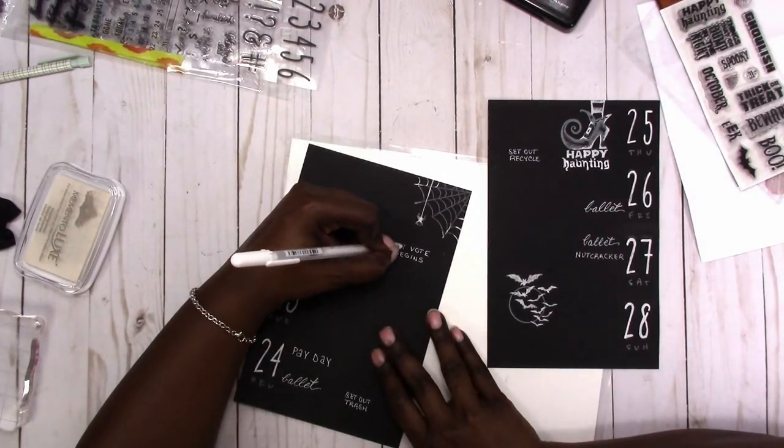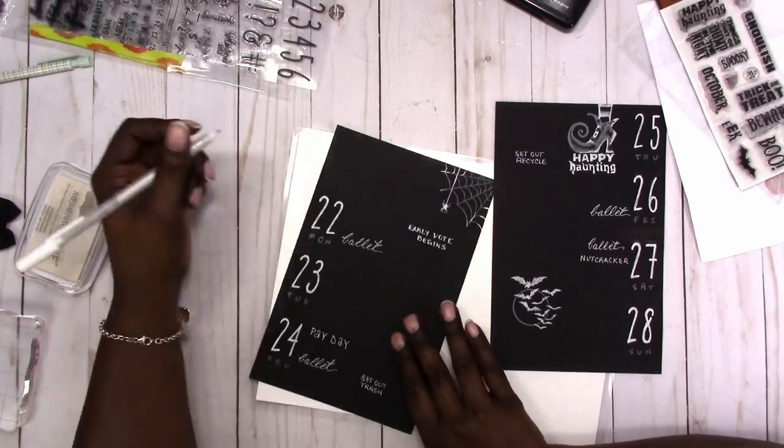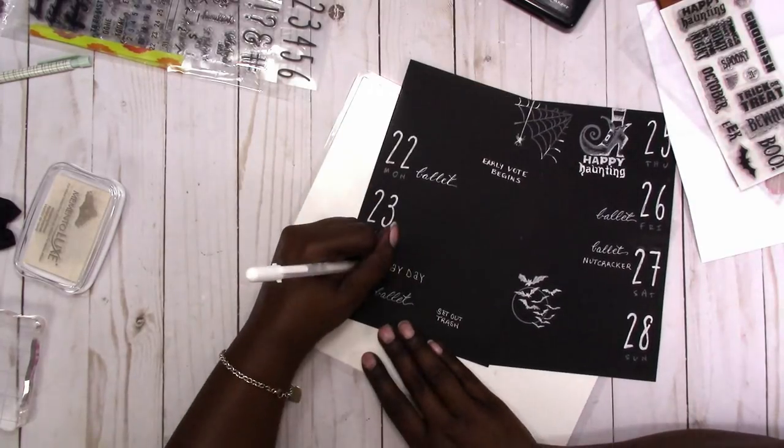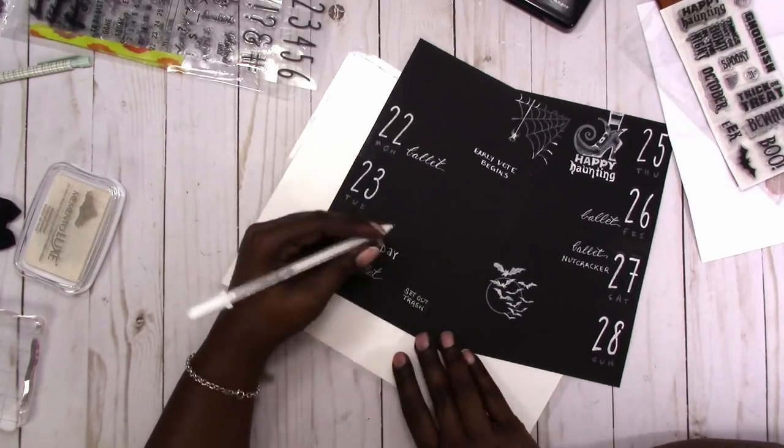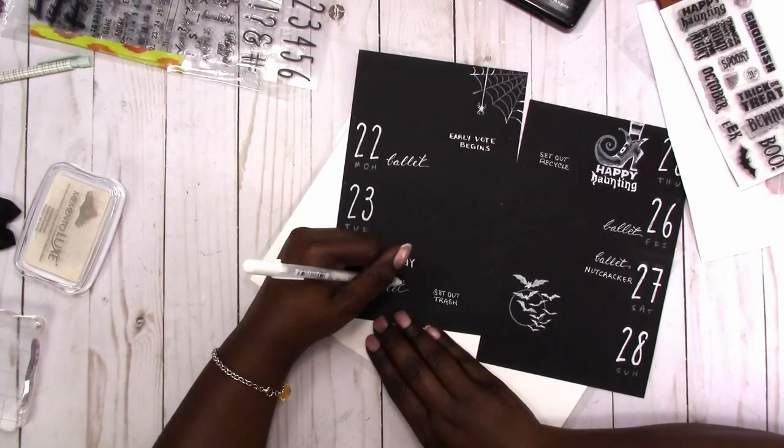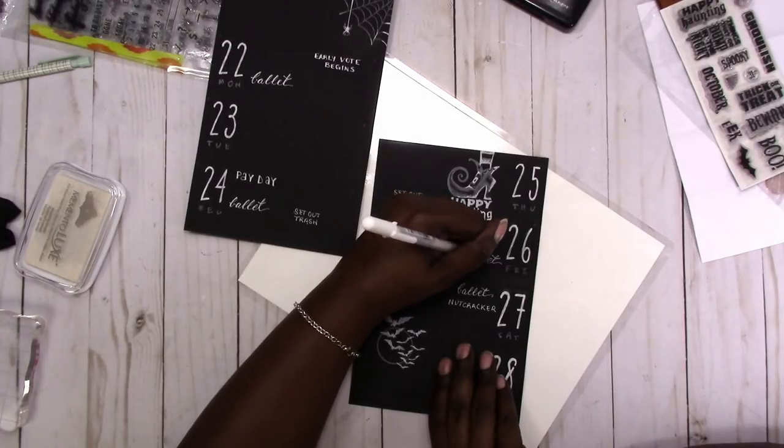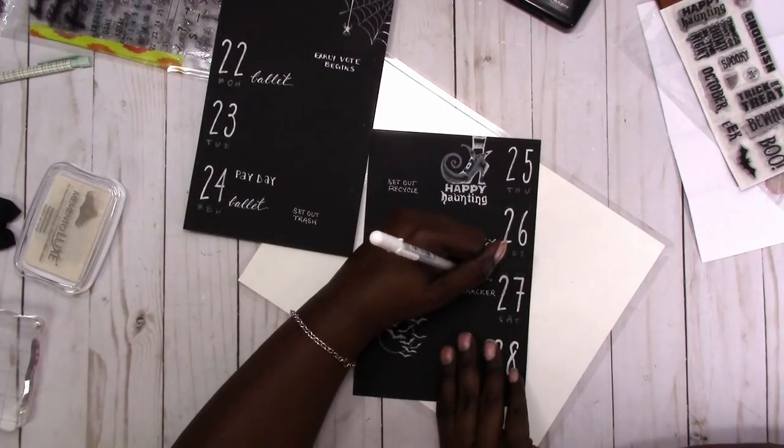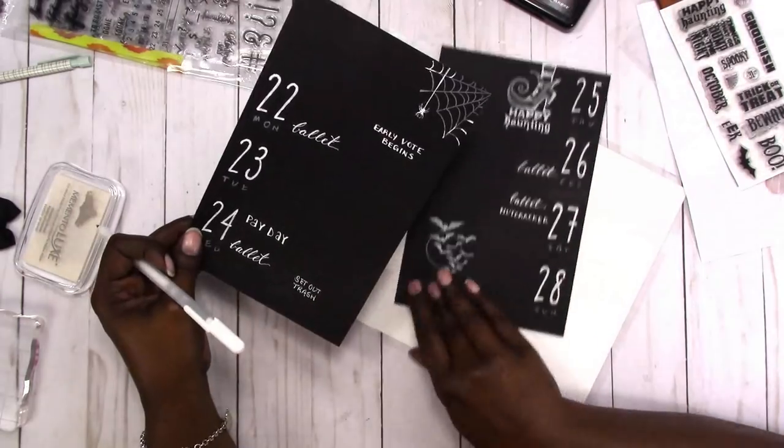We also have ballet on Saturday morning and Nutcracker rehearsal. I'm just going over the downstrokes on some of the plans and on the ballet just to make those pop out a little bit more. Especially on the cursive, it gives it more of a calligraphy feel. Since on this spread I'm not using any stickers, I kind of wanted my hand lettering to stand out a little more.